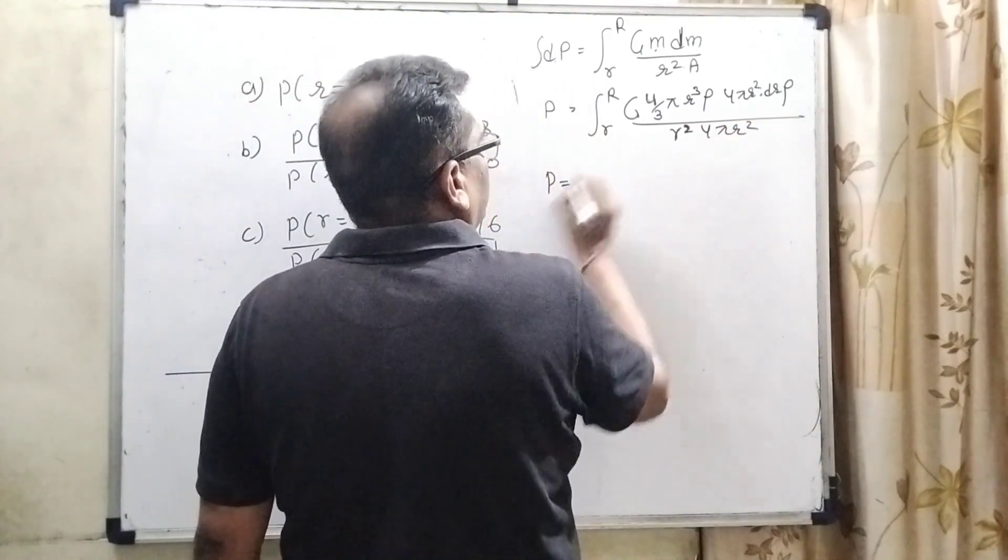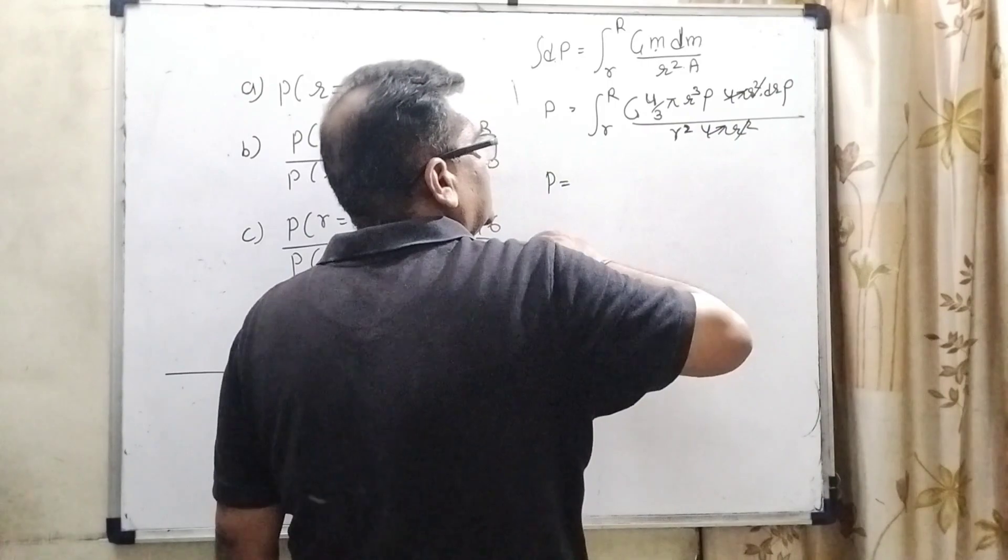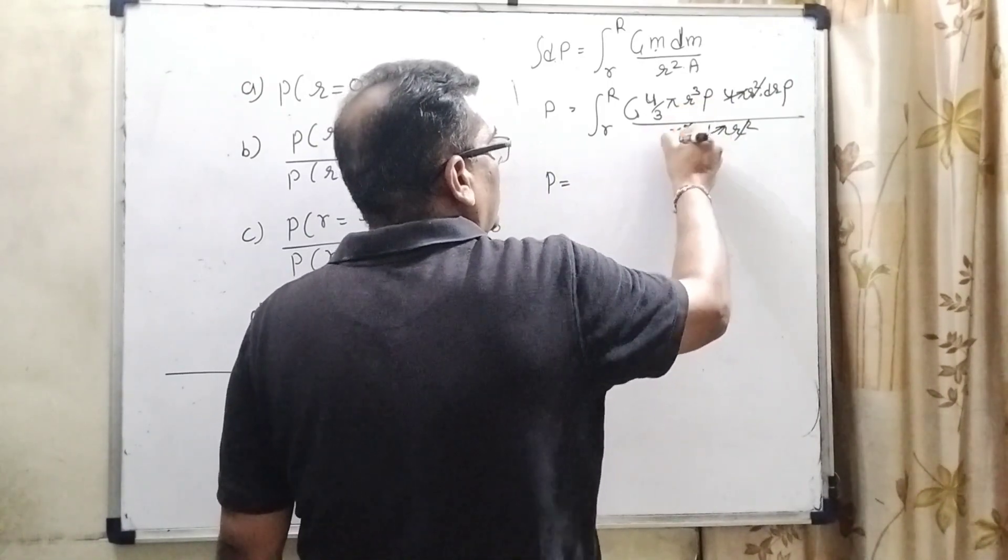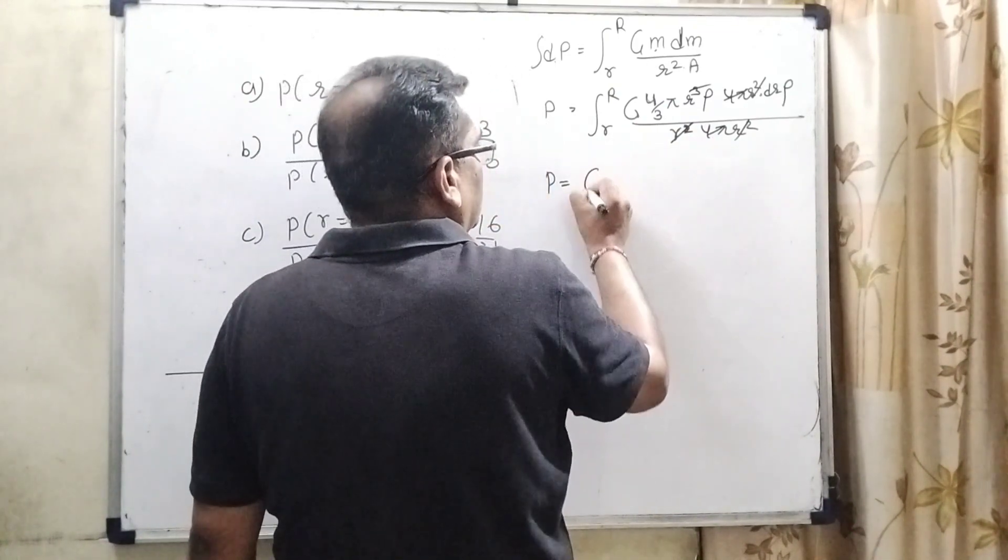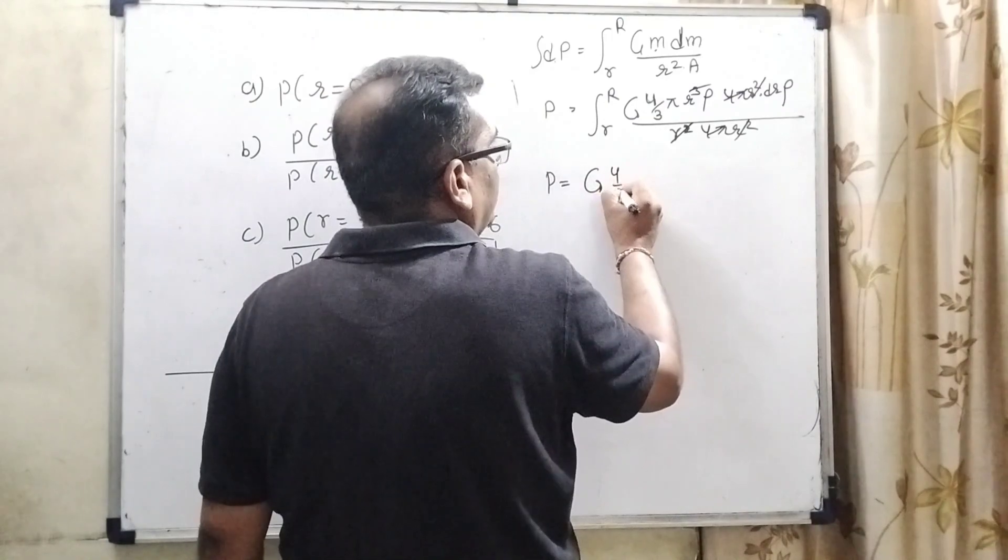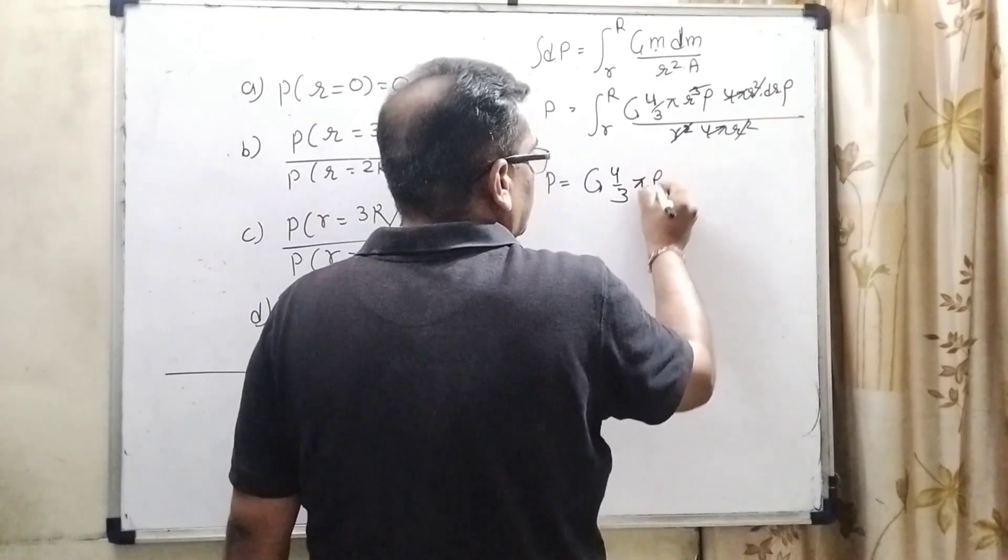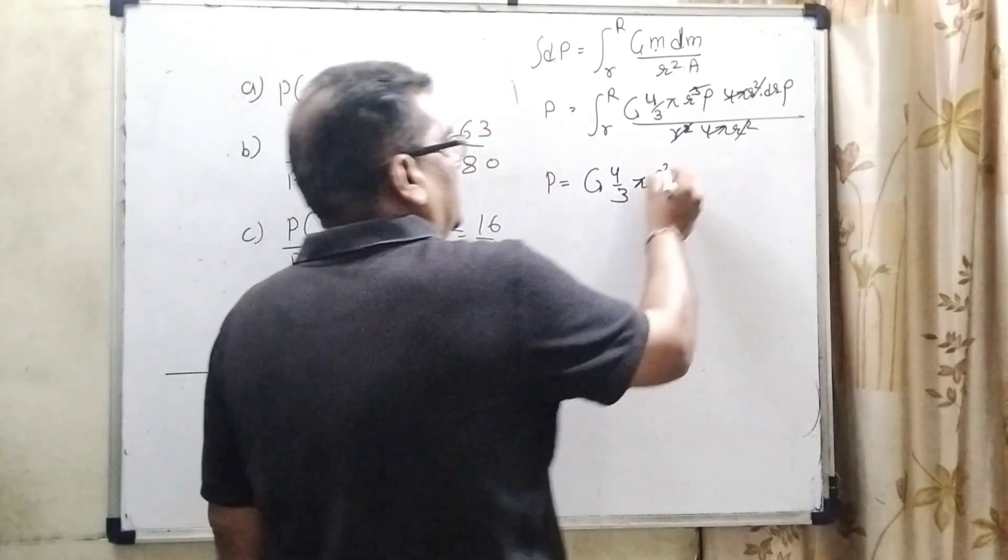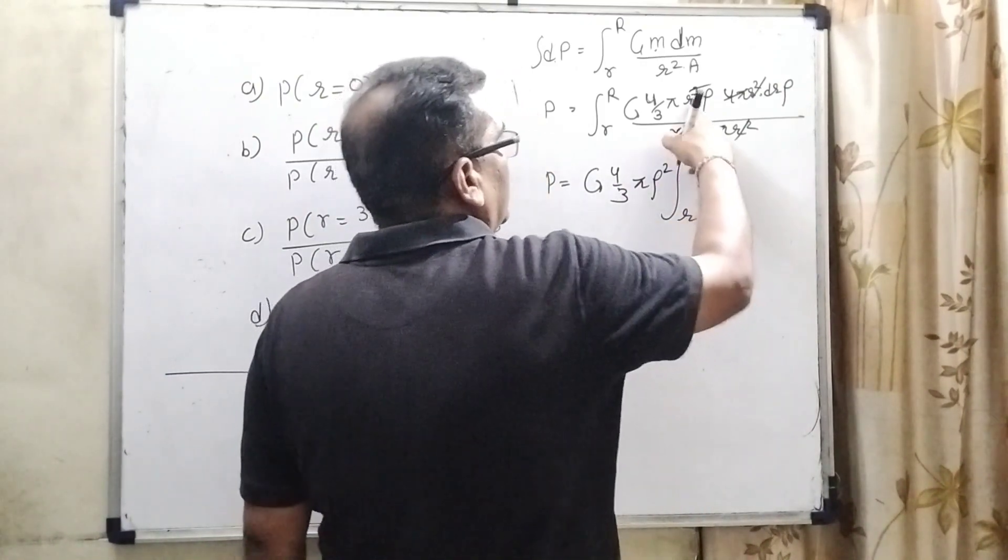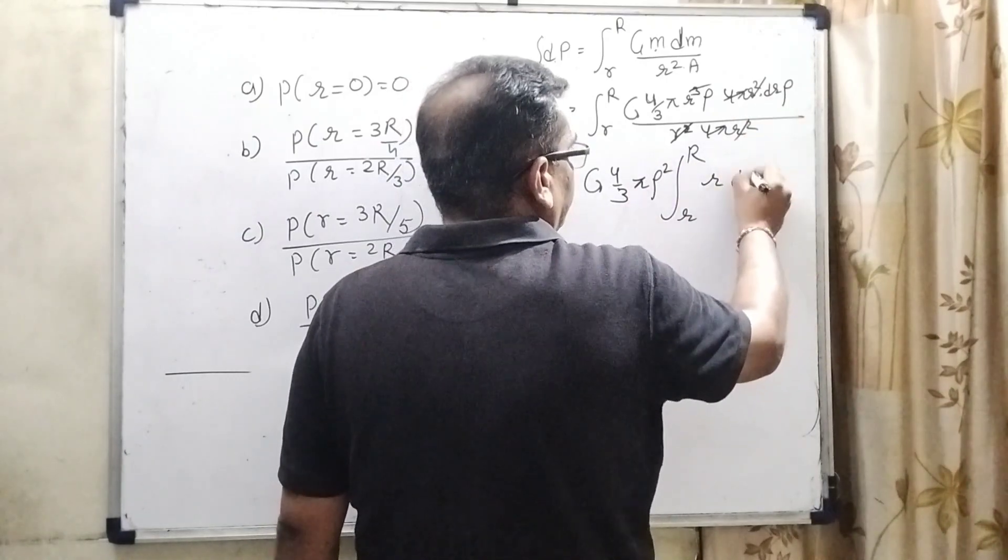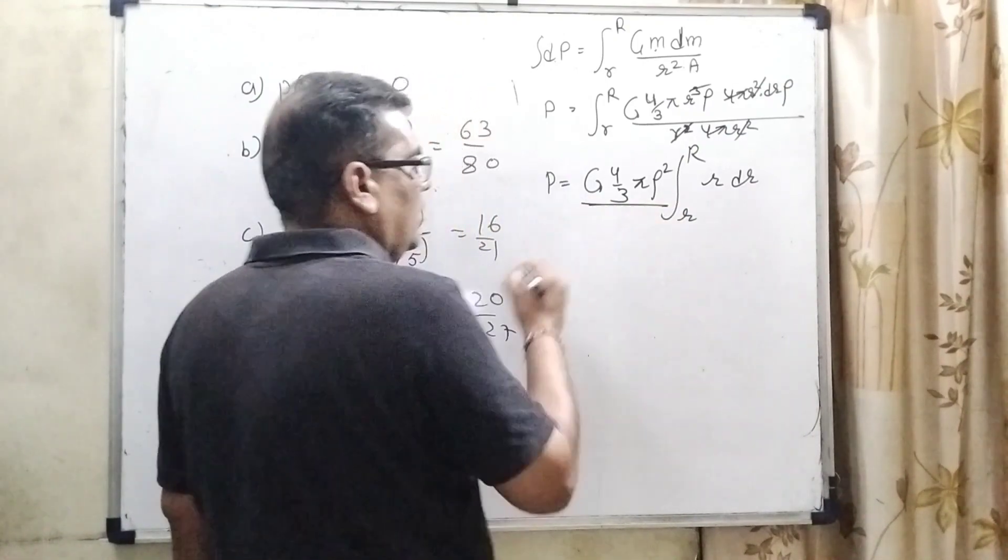Now P equals, you can see that 4 pi, 4 pi gets cancelled, r square, r square gets cancelled. Here r cube, this is r square, only one r remains. Capital G gets common, 4 by 3, pi and rho into rho means rho square gets common. For convenience, we can consider this full value becomes a constant. So here we have considered this constant as beta equals capital G, 4 by 3 pi rho square.